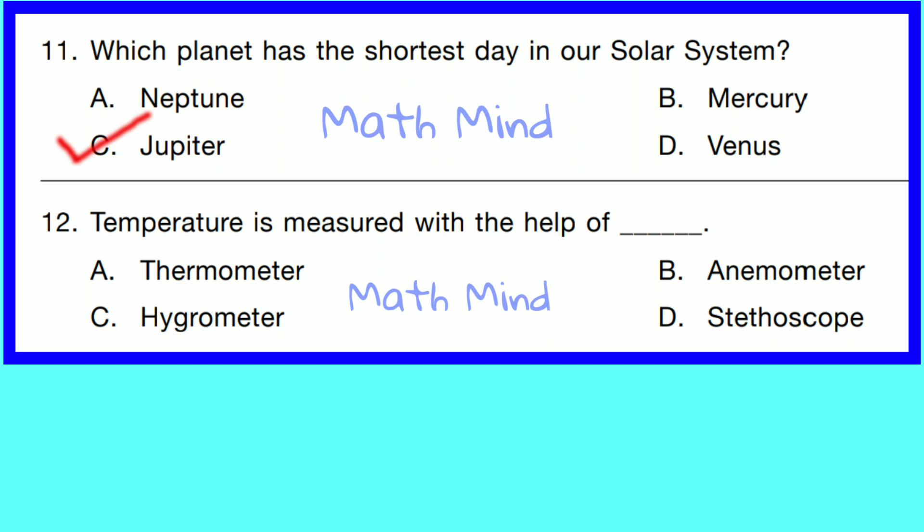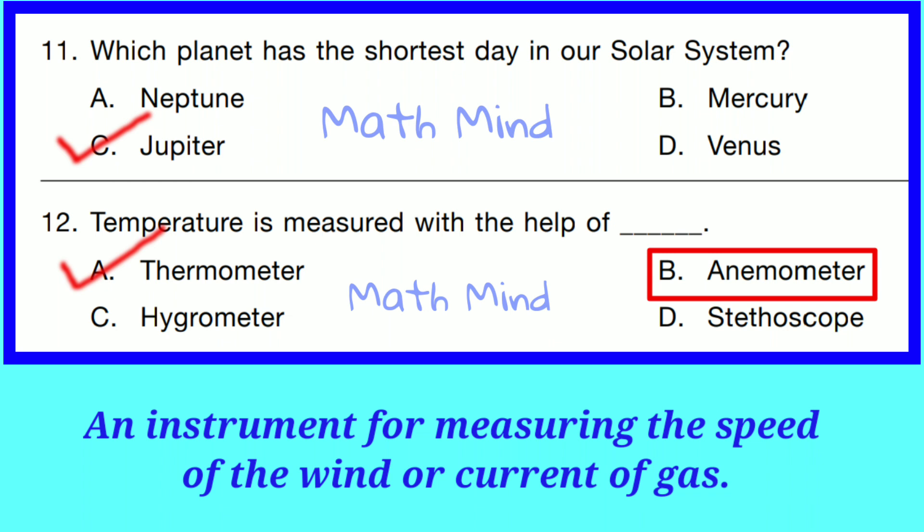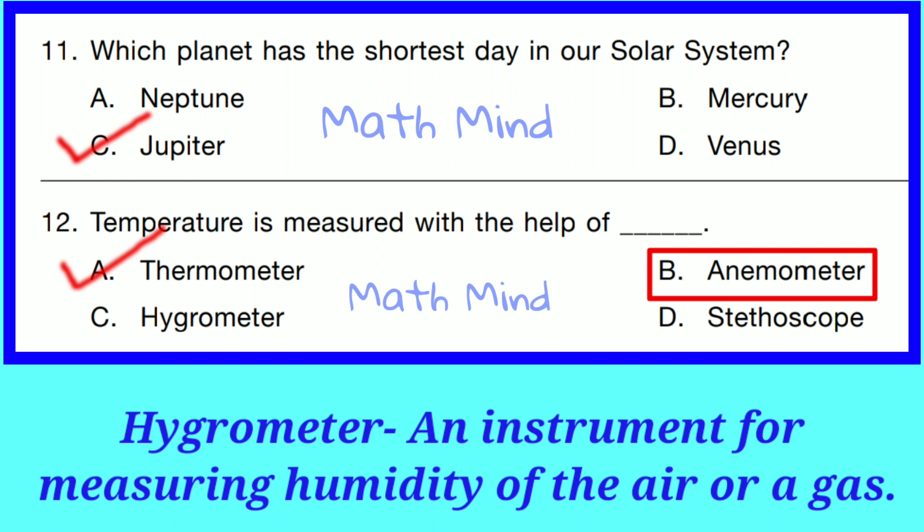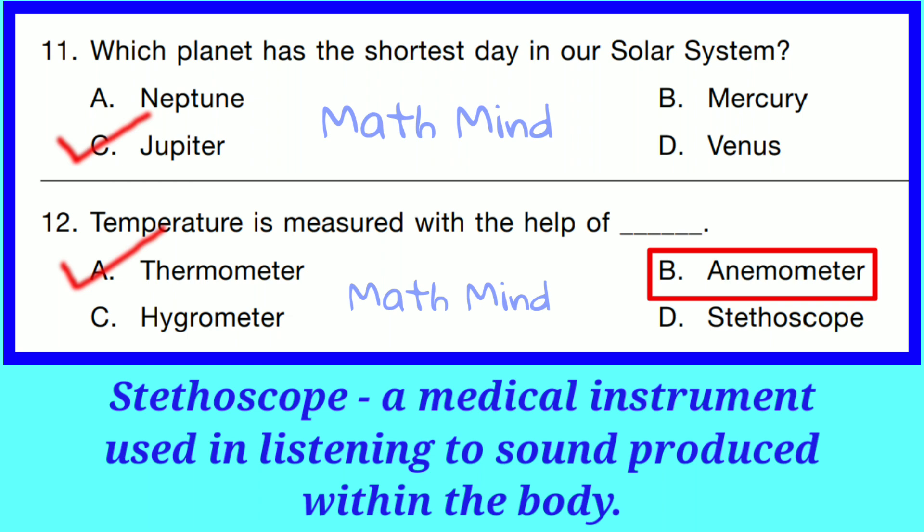Question No. 12. Temperature is measured with the help of a Thermometer. Option A is correct. Option B, Anemometer, is an instrument for measuring the speed of wind or any current of gas. Option C, Hygrometer, is an instrument for measuring the humidity of the air or a gas. Option D, Stethoscope, is a medical instrument used for listening to sounds produced within the body, like the heart or lungs.